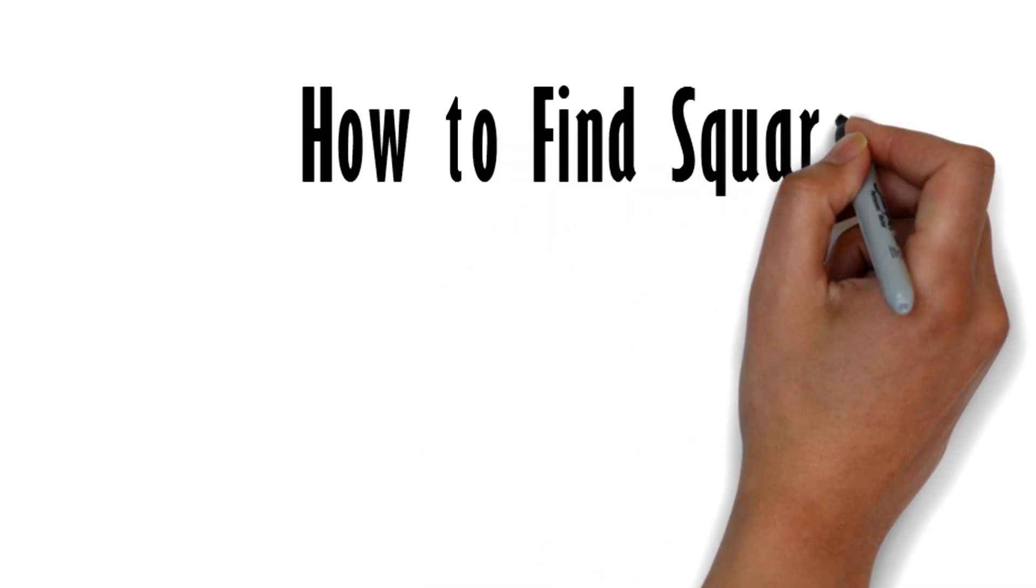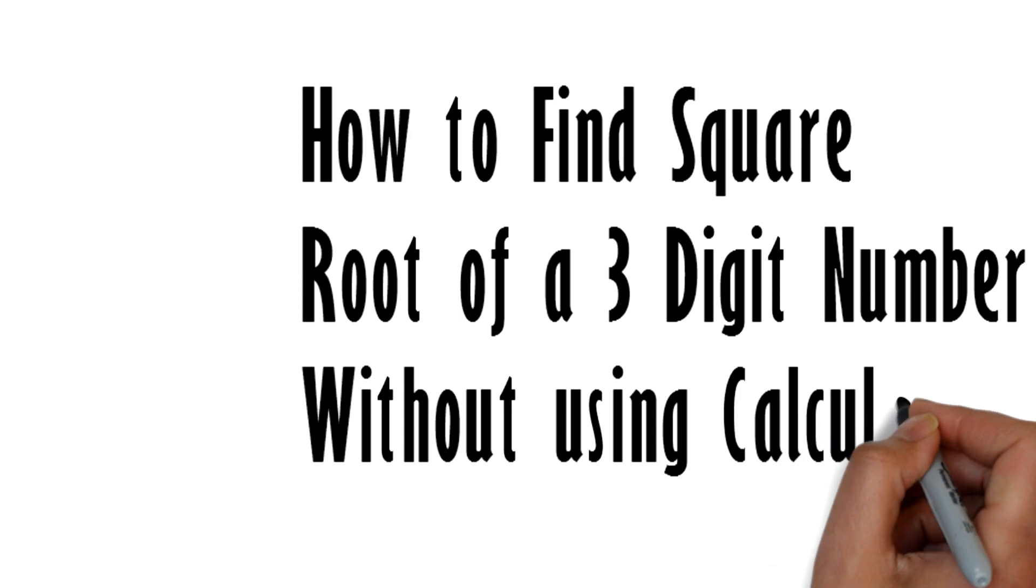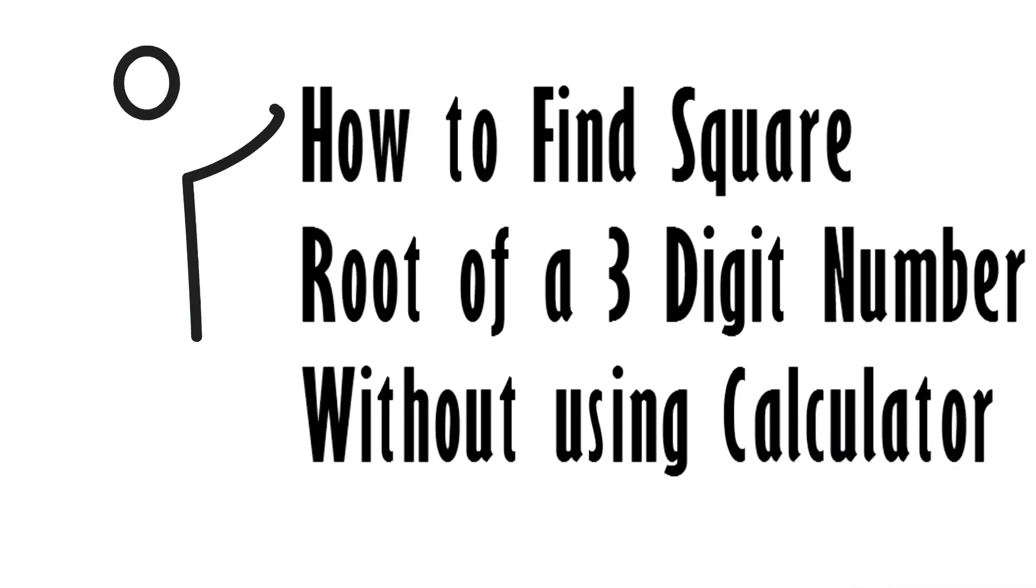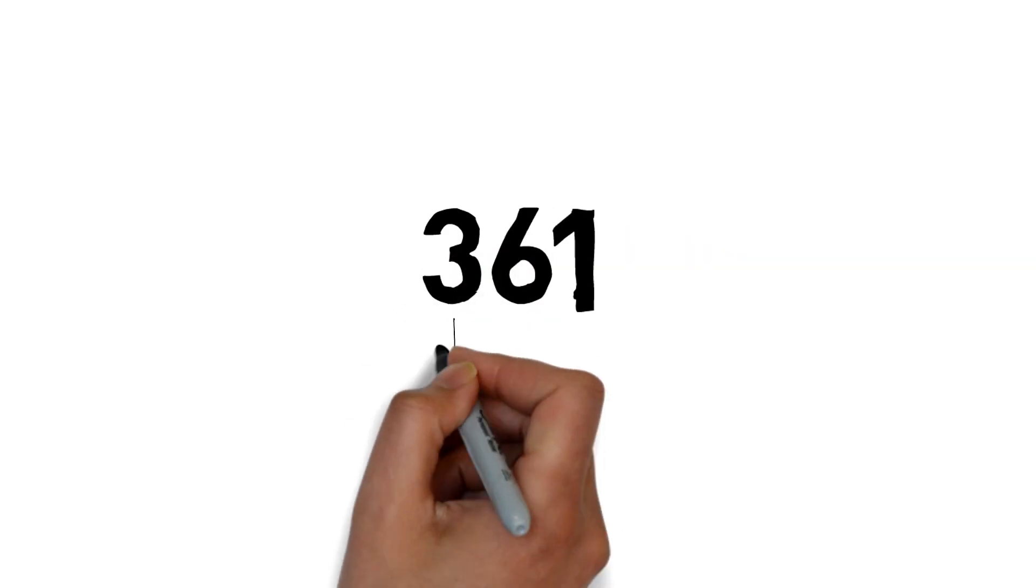Hello guys and welcome to our channel For the Greater Good. Today we'll be learning how to calculate the square root of a three-digit number without using a calculator. Let's take a three-digit number, say 361. We split this number into two parts: part a and part b.